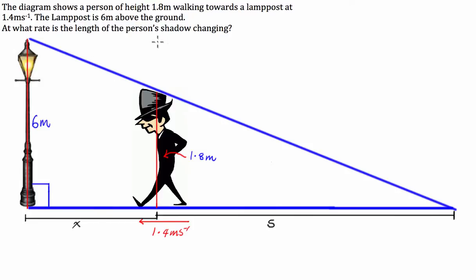So what we've got to find: at what rate is the length of the person's shadow changing? If it's a rate, this is going to be in terms of time. So what the question is asking for is the change in the length of the shadow with regards to the change in time. So that's what we're after.